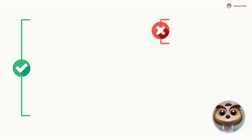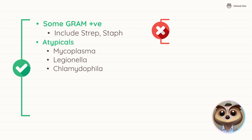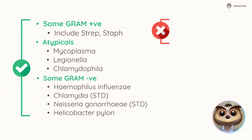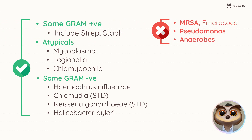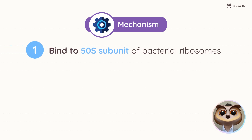They are effective against some gram-positive bacteria, such as Streptococcus and Staphylococcus species, and are particularly distinguished for their action against atypical pathogens like Mycoplasma, Legionella, and Chlamydophila. Additionally, macrolides cover certain gram-negative bacteria, such as Haemophilus influenzae, Chlamydia, Neisseria gonorrhoeae, and Helicobacter pylori, although they lack activity against MRSA, Enterococci, Pseudomonas, and anaerobes.